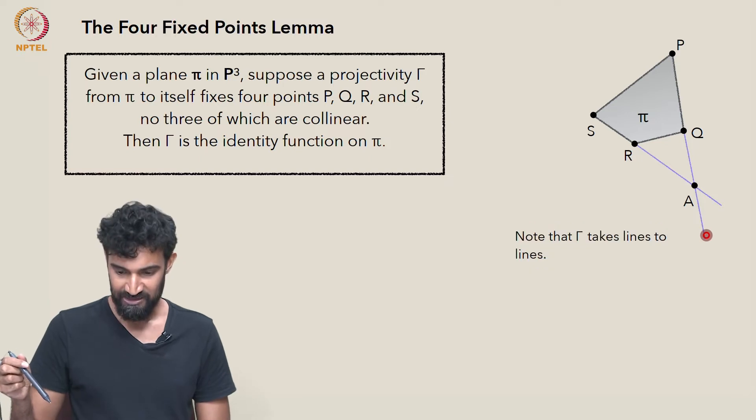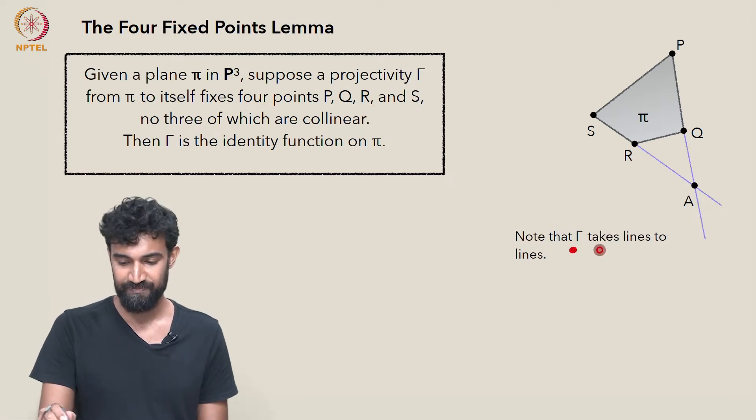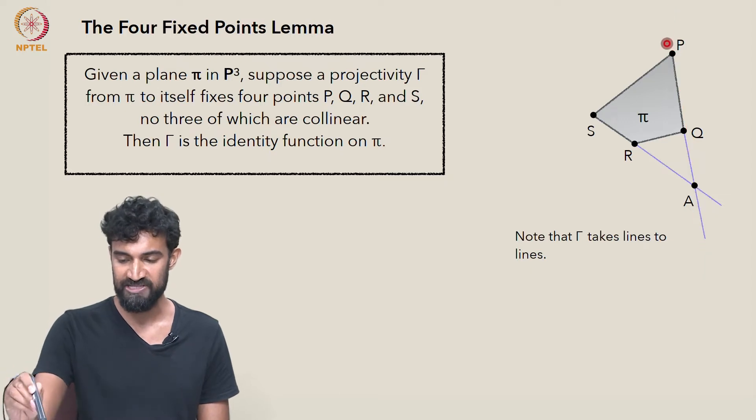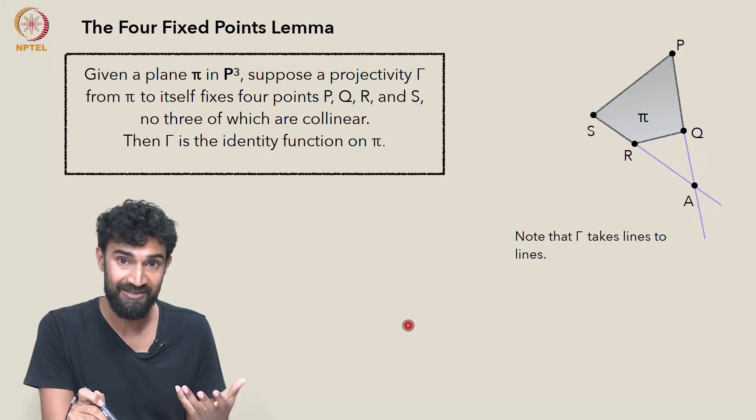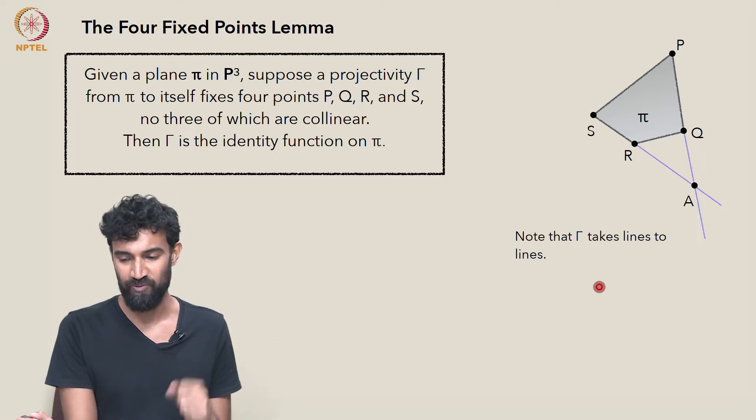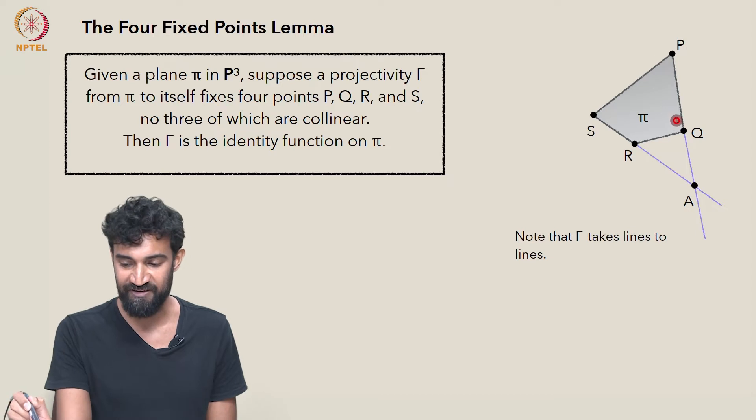γ takes lines to lines. So it takes the line through P and Q, this line PQ, to some other line in the plane π. But γ fixes P and it fixes Q.